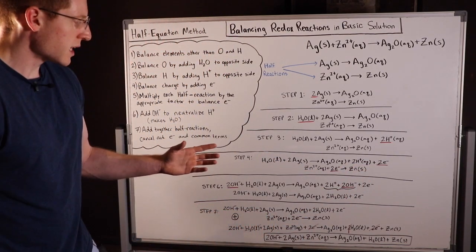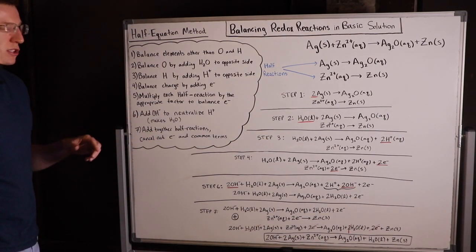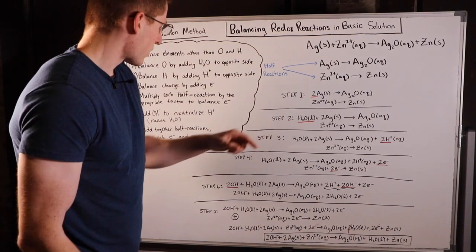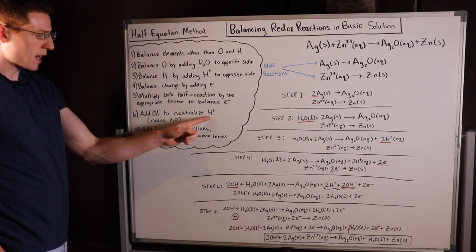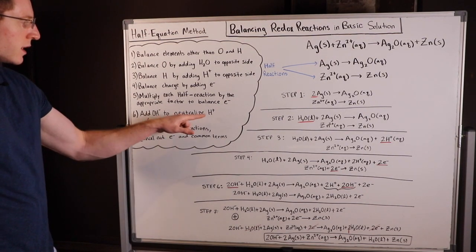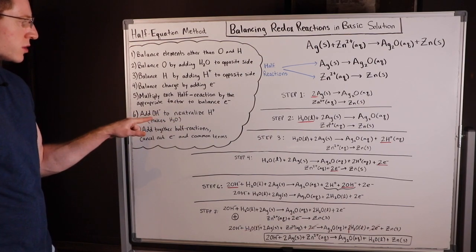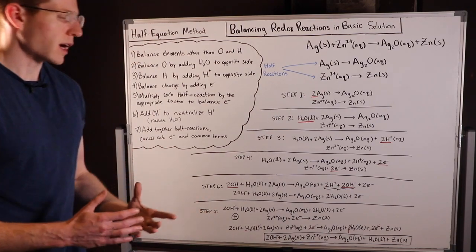Step six: now since we're in a basic solution we're going to add hydroxide ions to neutralize the hydrogen ions, and this ends up making water H2O. You can see we've got two H's and one O so it makes H2O.